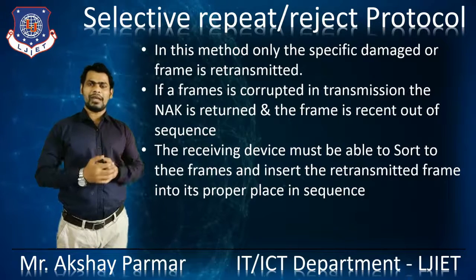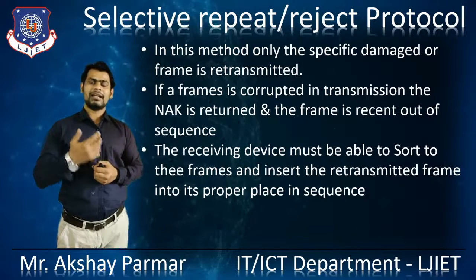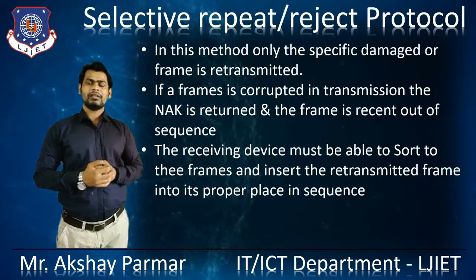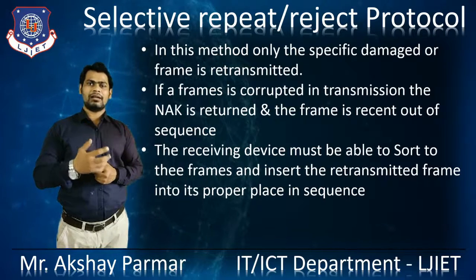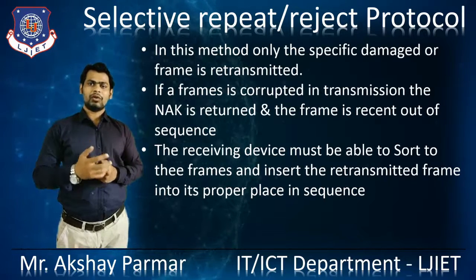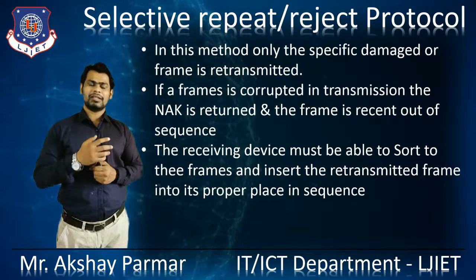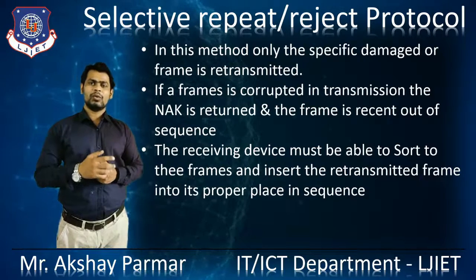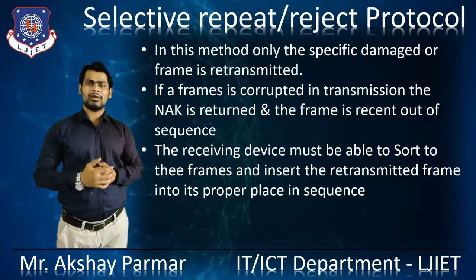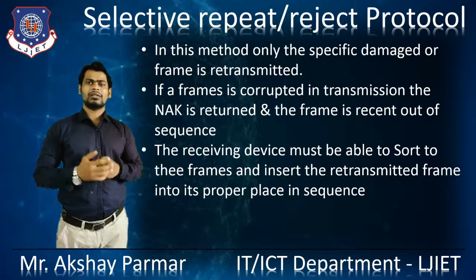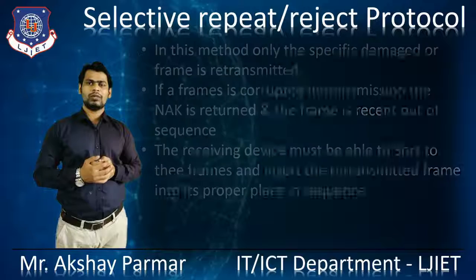So if any frame is erroneous, the sender will retransmit that frame. After getting that retransmitted frame, the receiver device will rearrange that frame into its proper sequence. That's how the Selective Repeat or Reject protocol works.